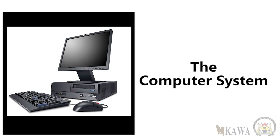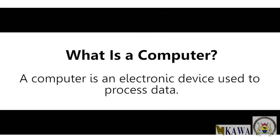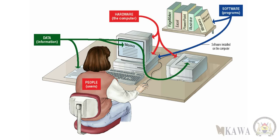Before we go any further, I know you have a question: what is a computer? I'm so grateful to answer that question. A computer is an electronic device used to process data. That's it — a simple definition. A computer is an electronic device used to process data.